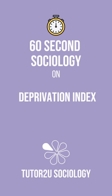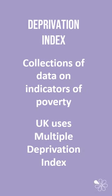In this 60 Second Sociology, we're going to look at the concept of a deprivation index. A deprivation index is a collection of data on indicators of levels of poverty. One of the first deprivation indexes was introduced by Townsend in his research.